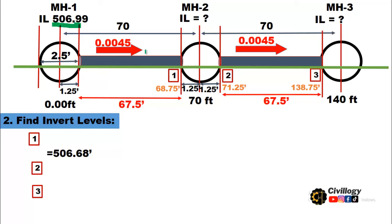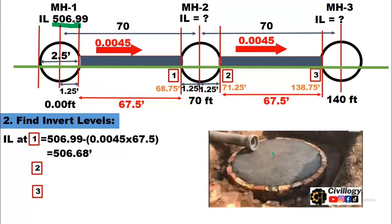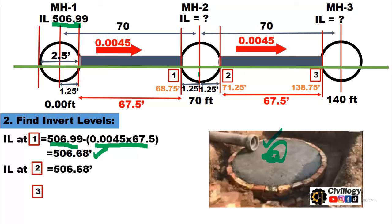Let's assume a slope of 0.0045 in the rightward direction, as the flow should move to the right. To calculate the invert level of manhole number 2, simply subtract the product of slope and distance from the invert level of manhole number 1. The slope is 0.0045 and the distance is 67.5 feet. Subtracting this product from 506.99 gives us 506.68, which is the invert level of manhole number 2.